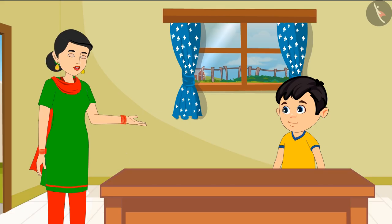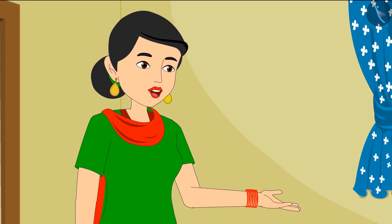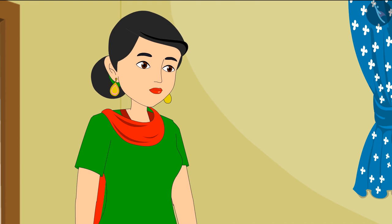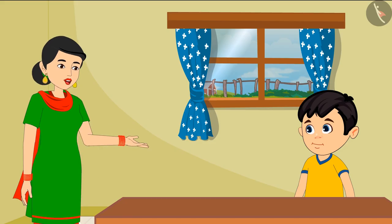'Now you understood, Chotu — while measuring objects we should not leave space between two hands. If we do not measure the entire length or miss any space in between, then the measurement will be wrong.' 'Okay mummy. This means whenever a measurement is to be made, there should not be any space left between two measures.'